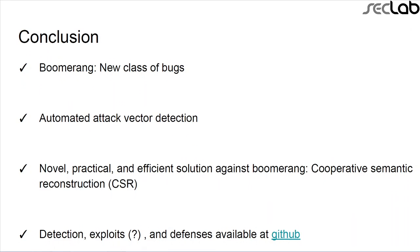To conclude: we presented Boomerang, a new class of vulnerabilities arising from the semantic gap in trusted execution environments. We have an automated way to detect which TAs are vulnerable and can be exploited. We proposed a novel, practical defense called CSR and showed it is efficient. All detection tools and defenses are available on GitHub — see the paper for the URL. We are not open-sourcing the exploits yet since fixes have not been released, but once they are, we will likely release the exploits as well. I'm ready for questions.